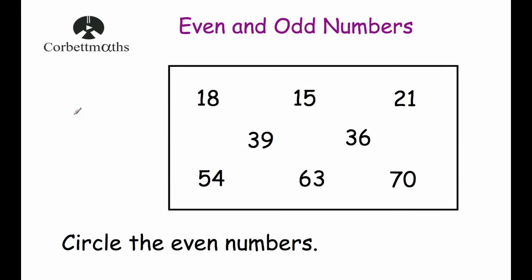So our first question says circle the even numbers. We've got these numbers: 18, 15, 21, 39, 36, 54, 63 and 70. Remember, even numbers end in either 0, 2, 4, 6 or 8. So 18 ends in 8 — that means 18 is going to be even.